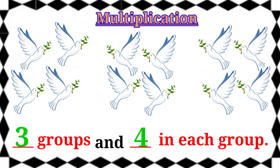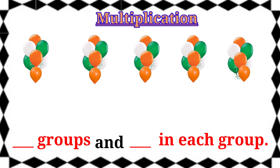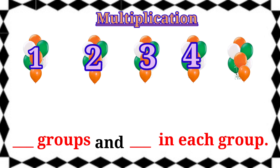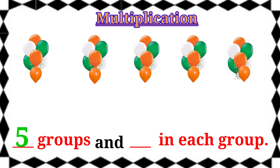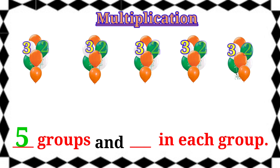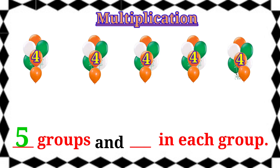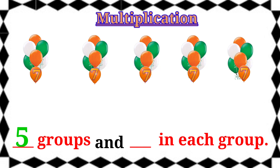Let's see the next example. First we will count groups. 1, 2, 3, 4, 5. Here 5 groups. Then count how many in each group. 1, 2, 3, 4, 5, 6, 7. Here 7 in each group. Therefore, the answer is 5 groups and 7 in each group.